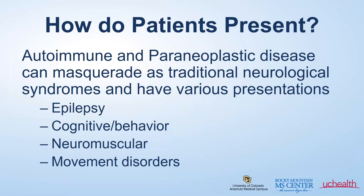How do patients present? Autoimmune and paraneoplastic disease can really masquerade as traditional neurologic syndromes with a wide variety of presentations. Autoimmune neurology intersects with multiple subspecialties, and patients can show up to epilepsy or seizure disorder clinics, cognitive and behavioral change clinics including rapidly progressive dementia-type pictures, neuromuscular disease clinics with neuropathies and myopathies, as well as movement disorder clinics with Parkinsonism, choreoform movements, or difficulty walking.